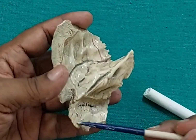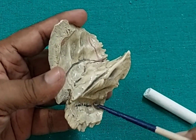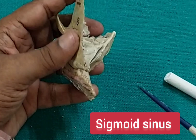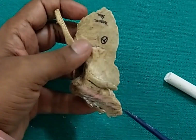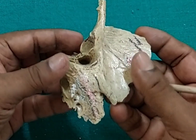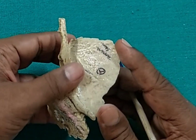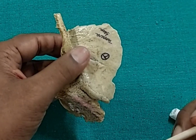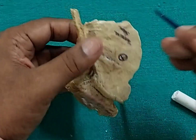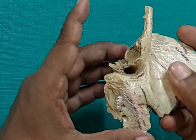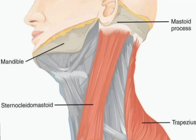On the medial surface of the mastoid part there is a deep sulcus which contains the sigmoid sinus. Mastoid air cells, which are air-filled spaces, are found in the mastoid part of the temporal bone. One important point: the mastoid process is not present at birth. It starts appearing at about the first year and fully appears at about the second year after birth. The reason for this is that the mastoid process is produced by the pull of the sternocleidomastoid muscle when the child holds the head upright.